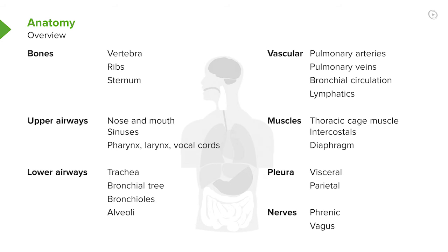One aspect I won't discuss, but is very important, is that the respiratory tract actually starts at the nose. So the upper airways are part of the respiratory tract as well, and that includes the nose, the mouth, the sinuses, the pharynx, the larynx, and the vocal cords.